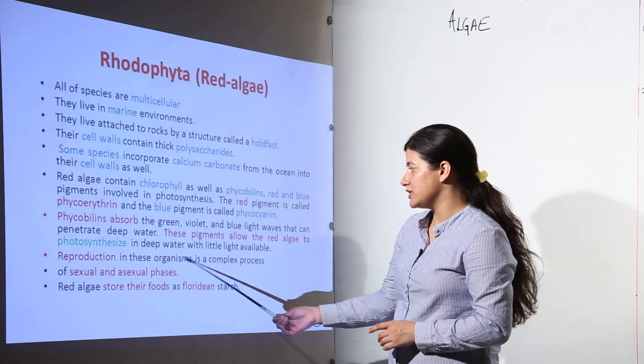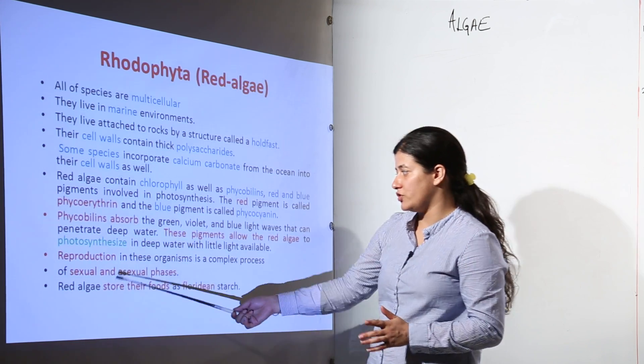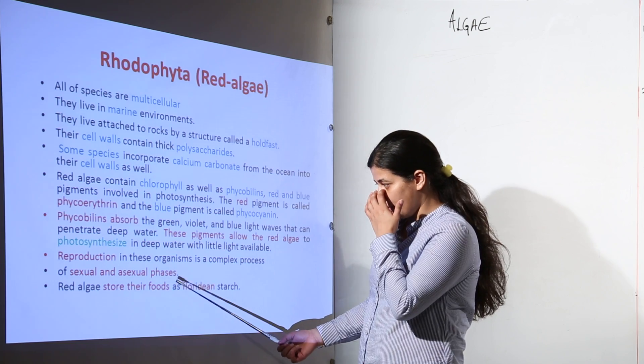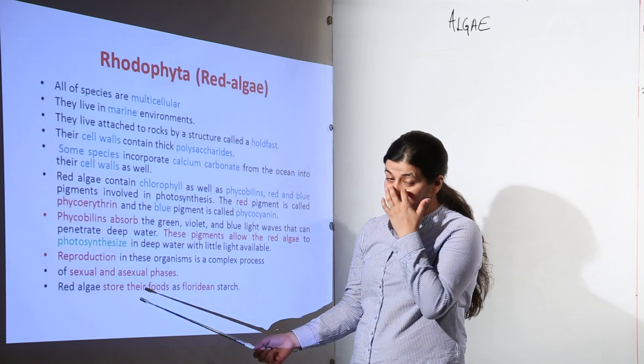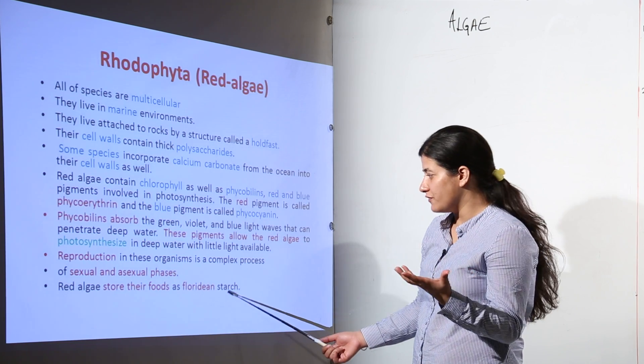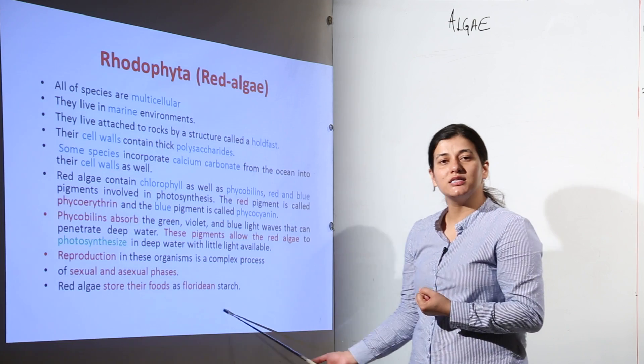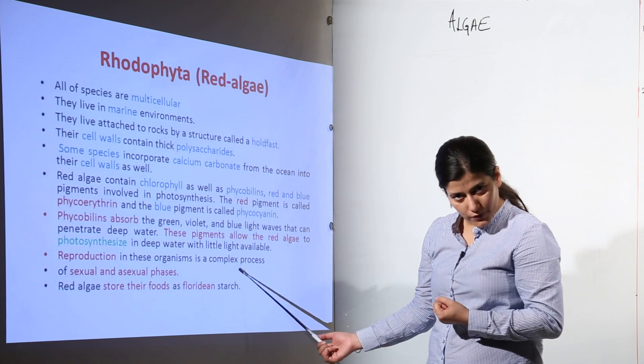Reproduction in red algae is a complex process involving sexual and asexual phases. The stored food material is in the form of floridian starch.